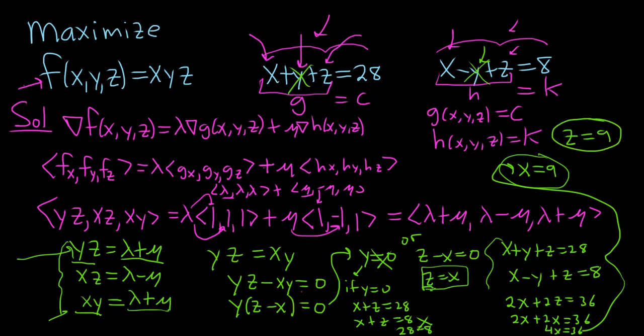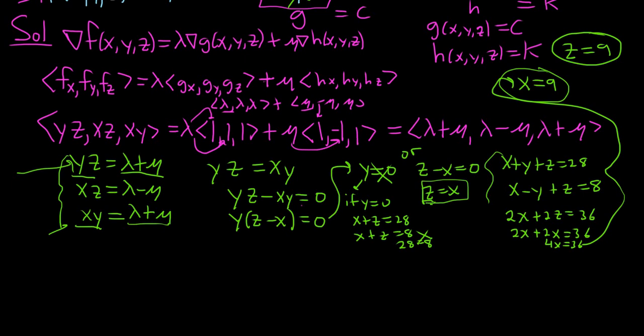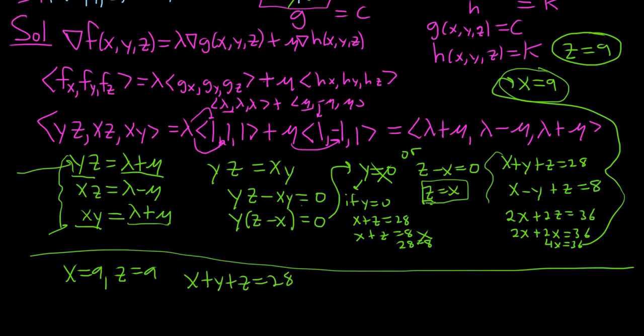And now we just need y. I suppose we can use any of the equations that we have. We have x equals 9, z equals 9. And we have this equation here, x plus y plus z equals 28. That's one of our constraints. Let's plug everything in and solve for y. So we have 9 plus y plus 9 equals 28. So y plus 18 equals 28. So y is equal to 10. So now we have x, y, and z. And so life is good.